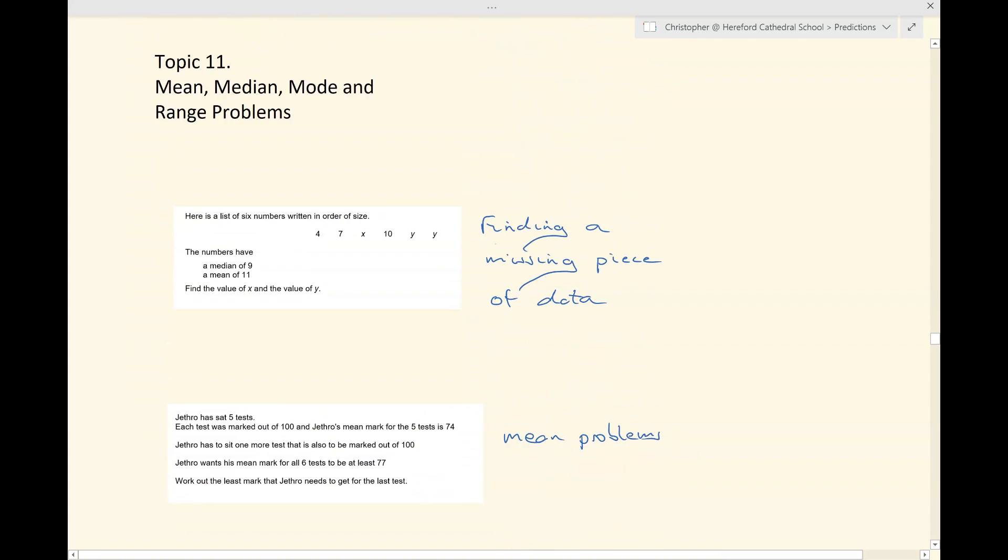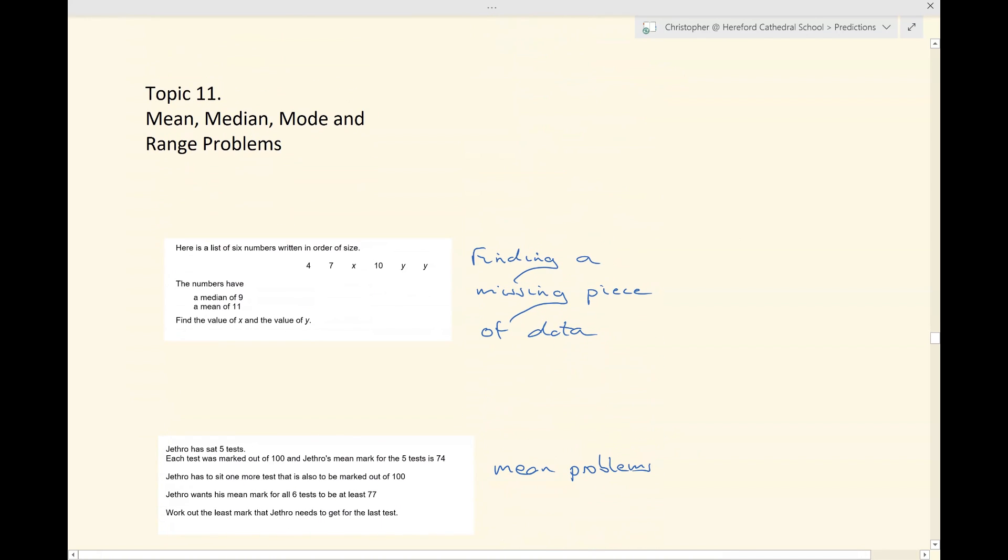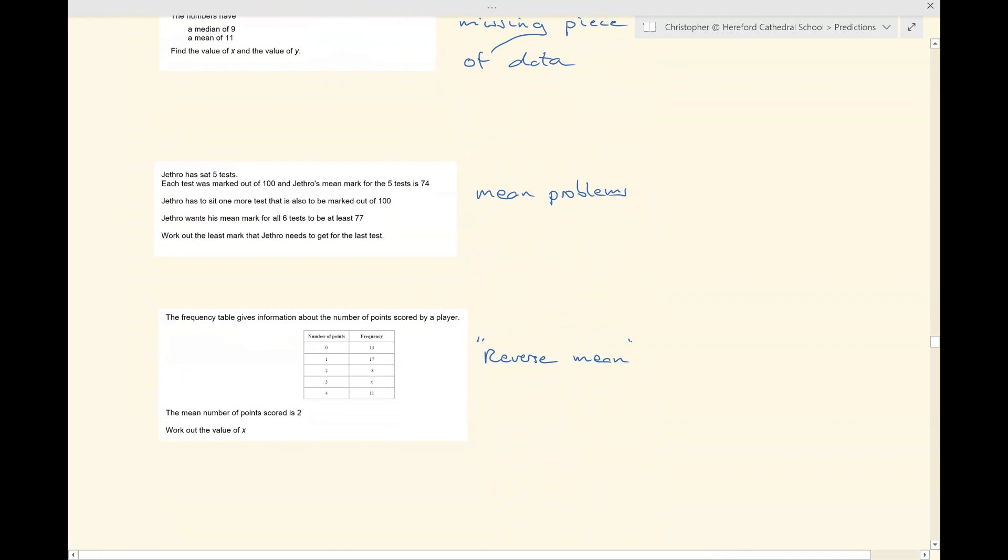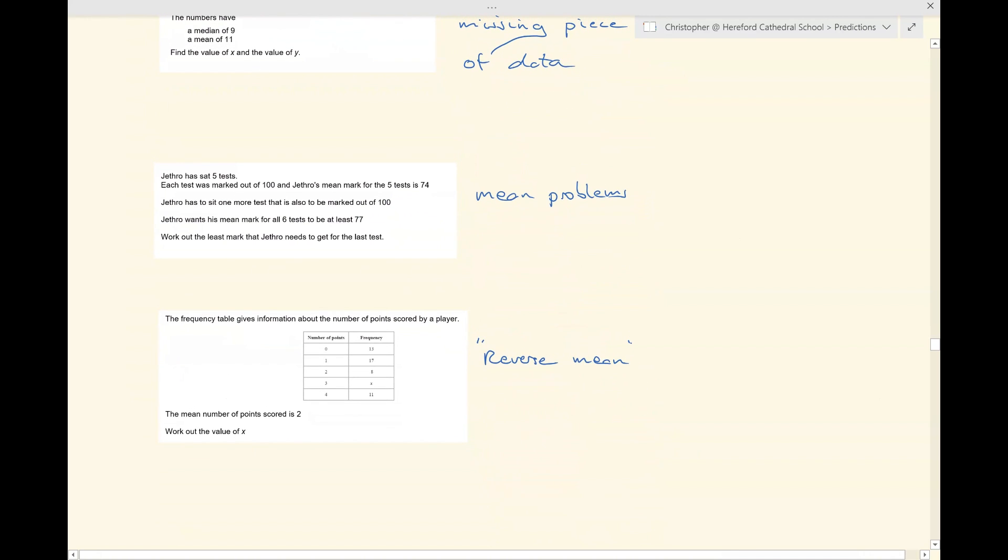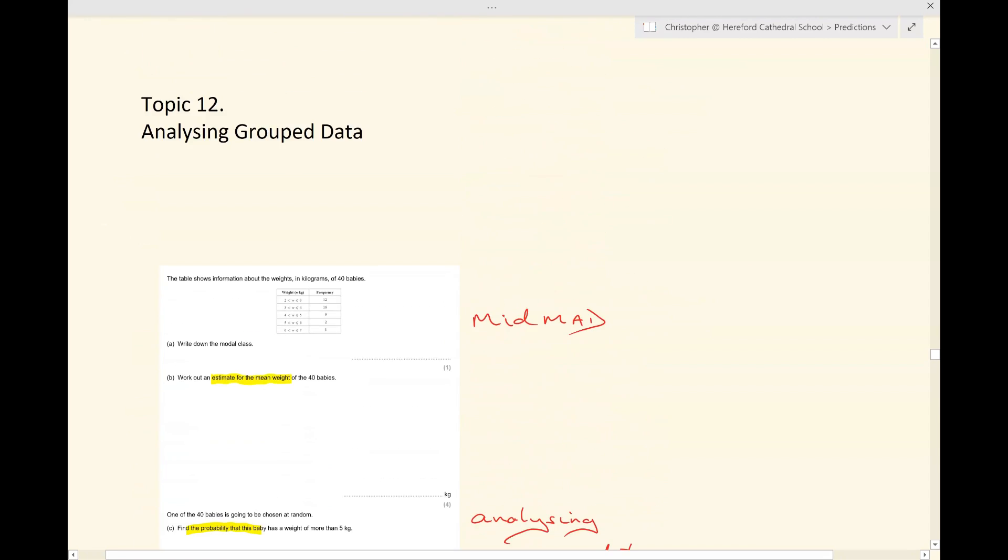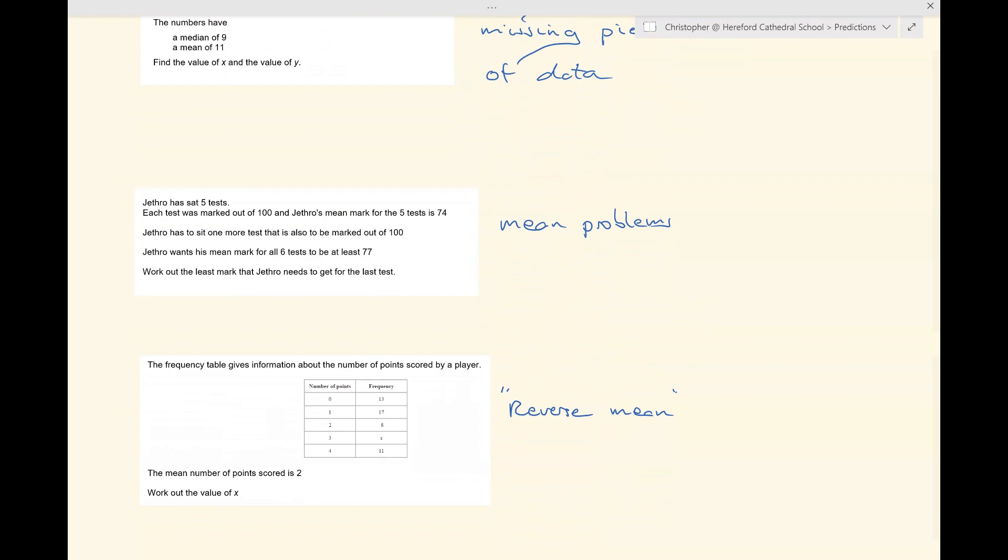Moving on. Mean, median, mode, and range problems. There are lots of different ways in which the examiners can test your knowledge of mean, median, mode, and range. They can ask questions which need you to find a missing piece of data, such as this top question here. Very often we see mean problems which involve you having to find the total of all the data values. Sometimes you're asked, well, lots of students call this the reverse mean, where you're given the mean and you're asked to find a missing value. In this case, the missing frequency in that frequency table.